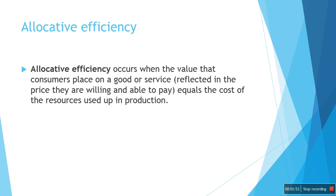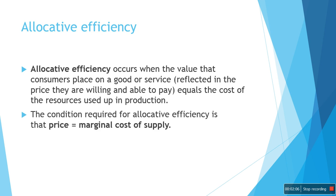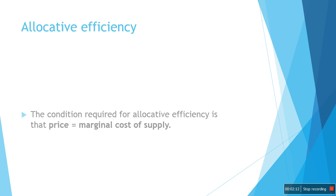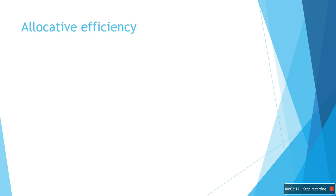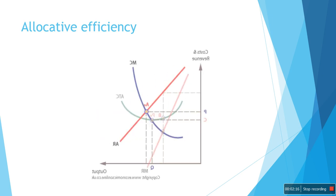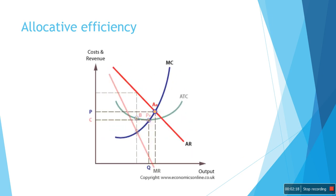Allocative efficiency. Allocative efficiency occurs when the value the consumers place on the goods or services equals the cost of the resources used up in production. The condition required for allocative efficiency is that price is equal to marginal cost of supply. They make the most of the scarce resources that consumers wanted without wasting it.